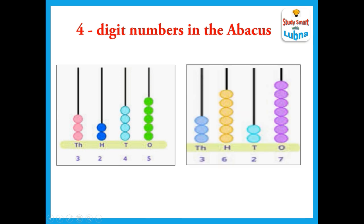Another example. Here you can see again a four digit number. The place values are ones, tens, hundreds, and thousands. In ones we have seven beads, in tens we have two beads, in hundreds we have six beads, and in thousands we have three beads. So the number can be read as 3627.